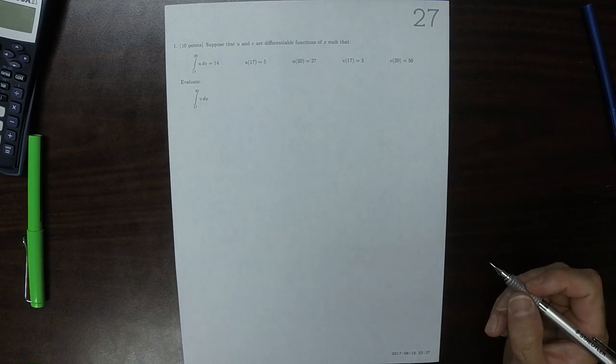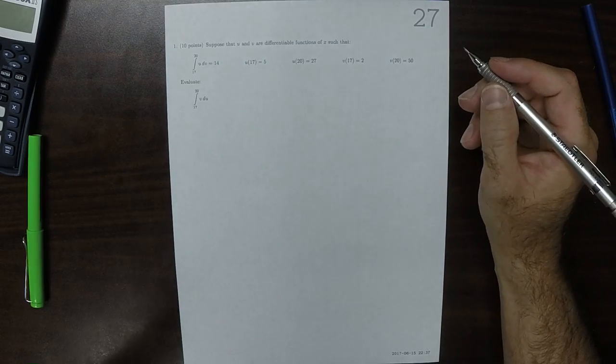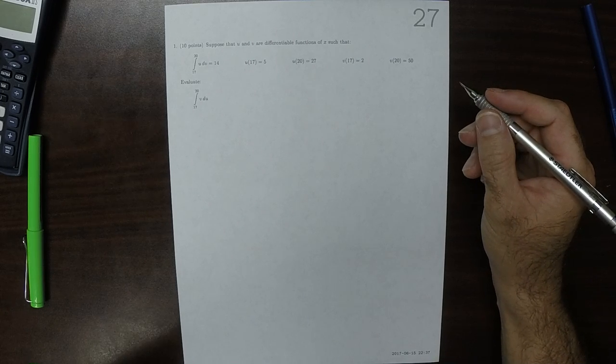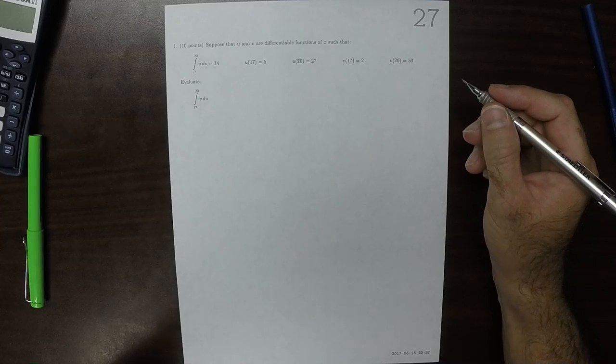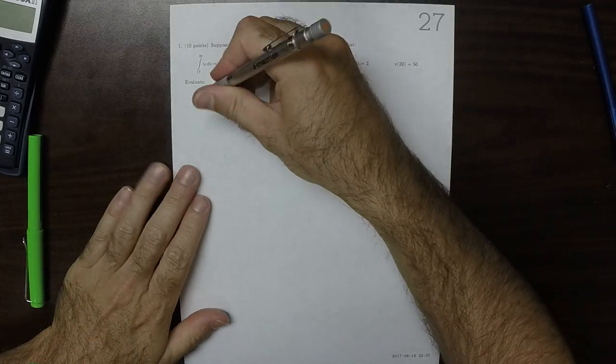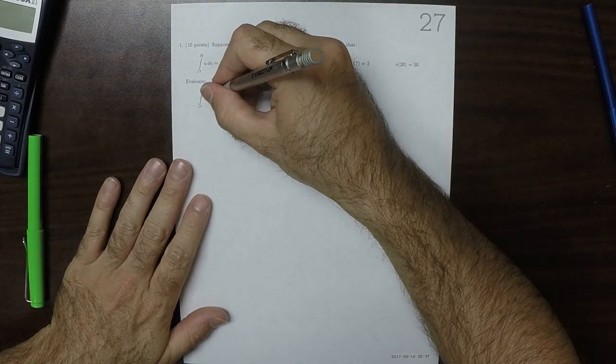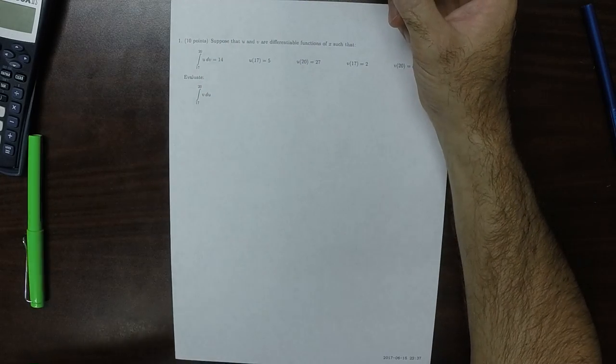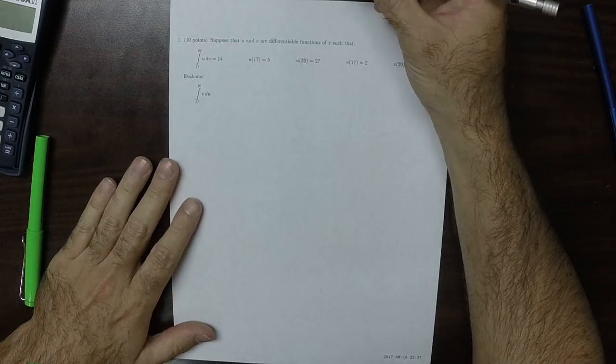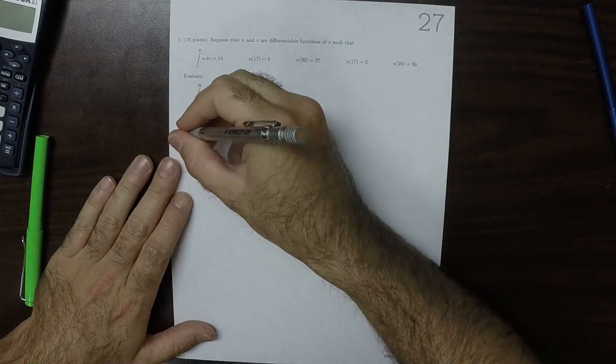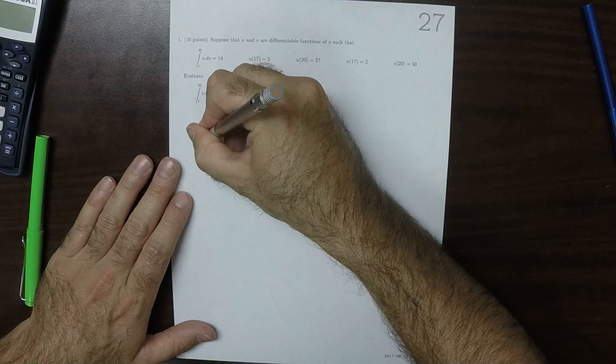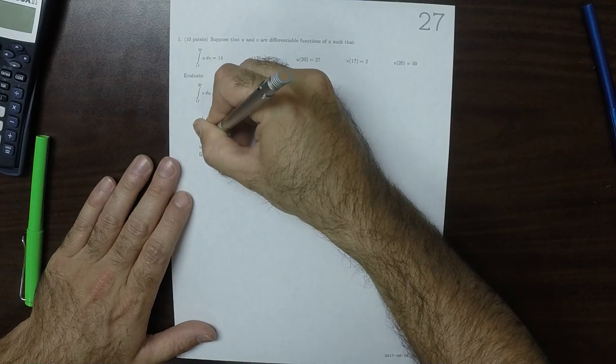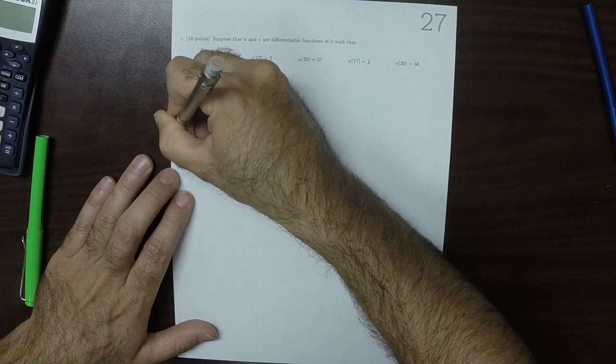This is the solution to written homework 27. What we know is that the integration by parts formula says that the integral from A to B of U dV, so this is by parts.